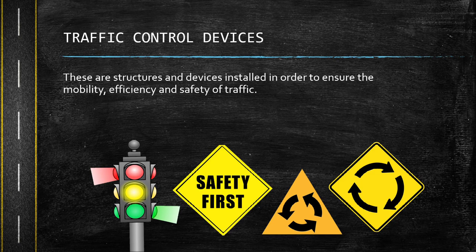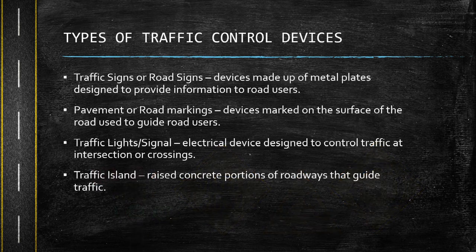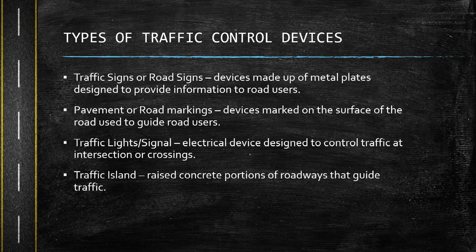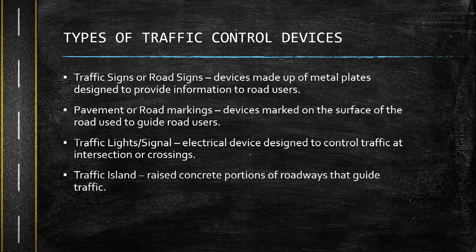The pictures in the PowerPoint presentation show samples of different traffic control devices. The types of traffic control devices are: traffic signs, pavement or road markings, traffic lights or signals, and traffic islands. Traffic signs or road signs are devices made up of metal plates designed to provide information to road users. Pavement or road markings are devices marked on the surface of the road used to guide road users — the white lines or yellow lines seen on roads and highways. Traffic lights or signals are electrical devices designed to control traffic at intersections or crossings. Traffic islands are raised concrete portions of roadways that guide traffic, dividing the road into opposite directions.